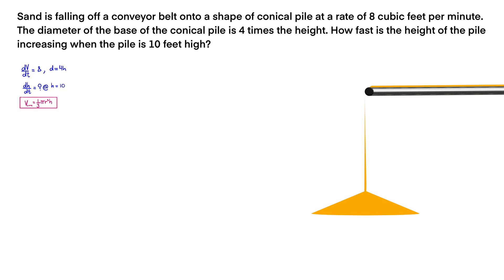Next, we can use the volume equation of a cone relating the quantities whose rates of change are known to the quantity whose rate of change is to be found when we differentiate. In this case, the volume of a cone equals (1/3)πr²h.